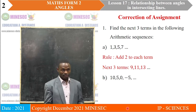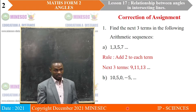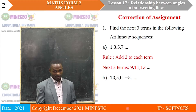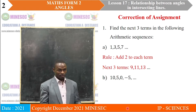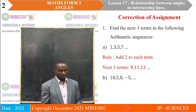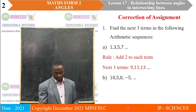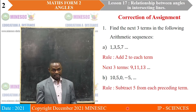We move to part B. The sequence in B is 10, 5, 0, negative 5. Looking at that sequence, from 10 to 5, you see that 5 has been subtracted. From 5 to 0, 5 has also been subtracted. From 0 to negative 5, 5 has been subtracted. So the rule is: subtract 5 from each preceding term.